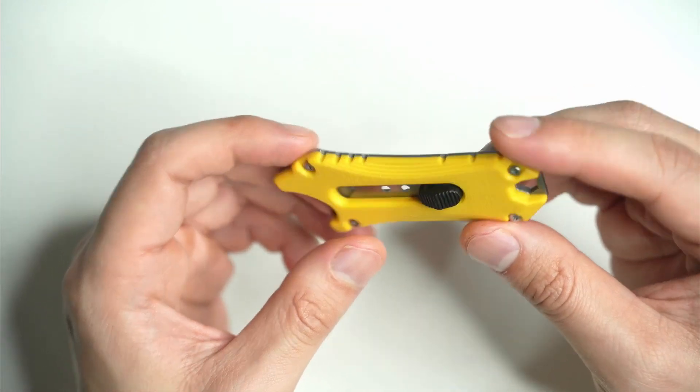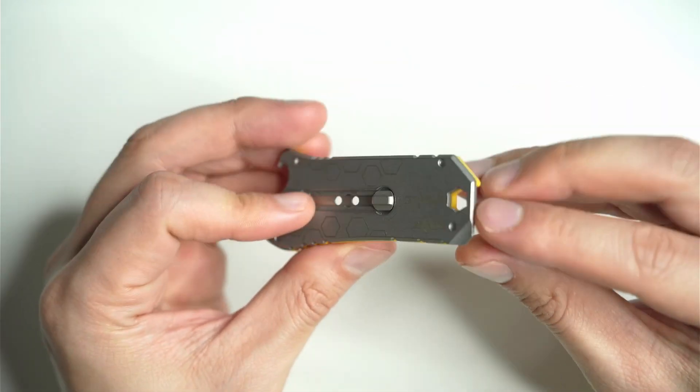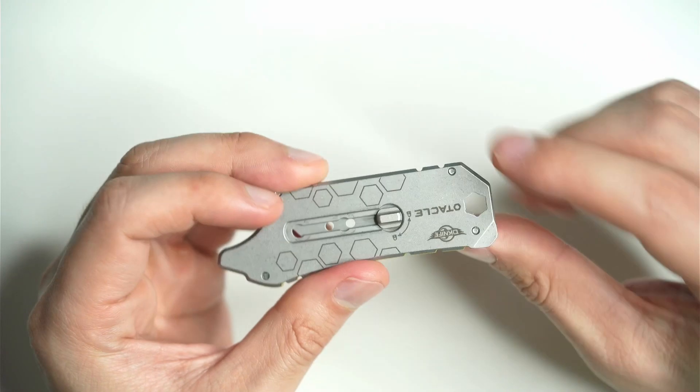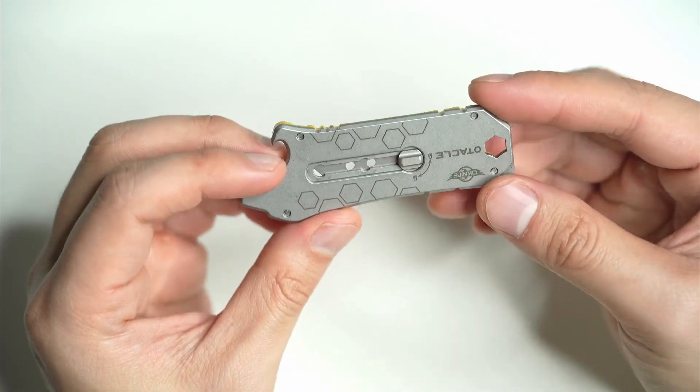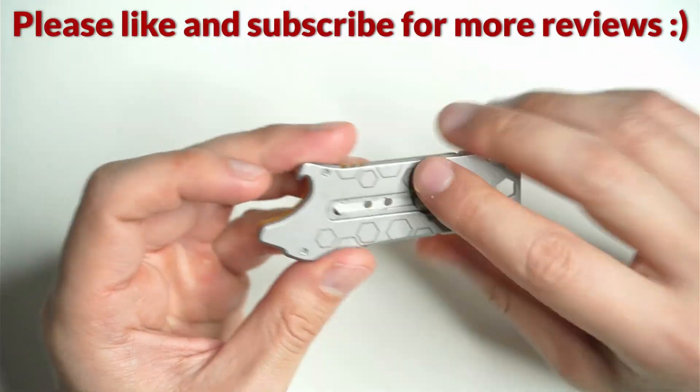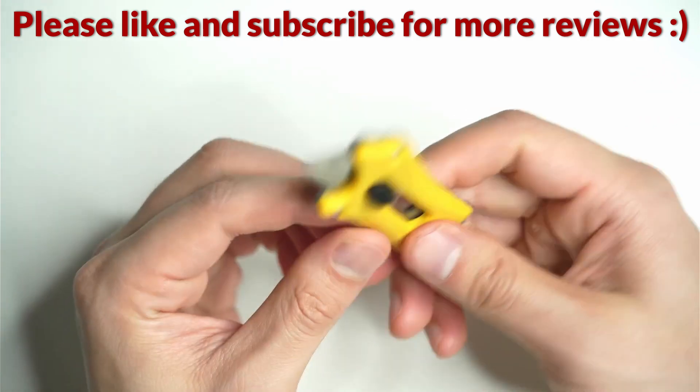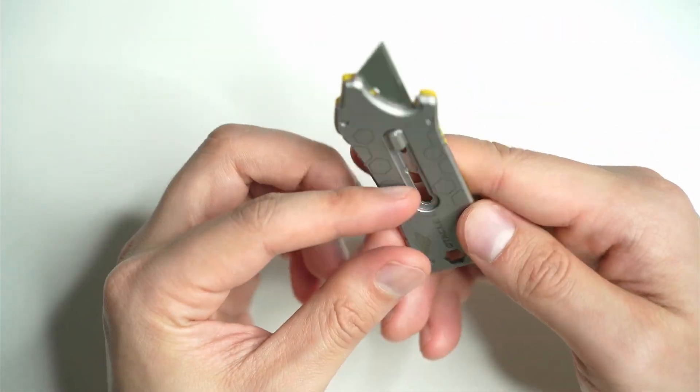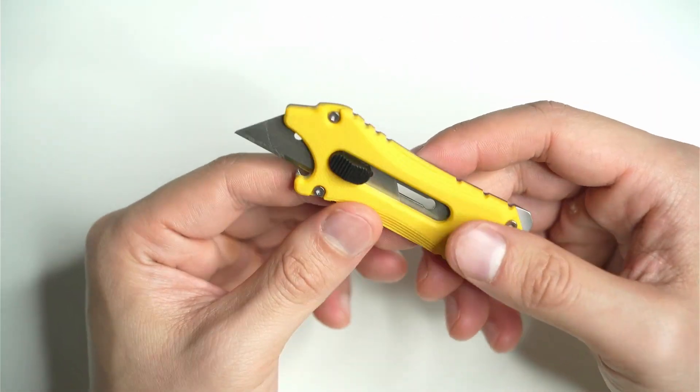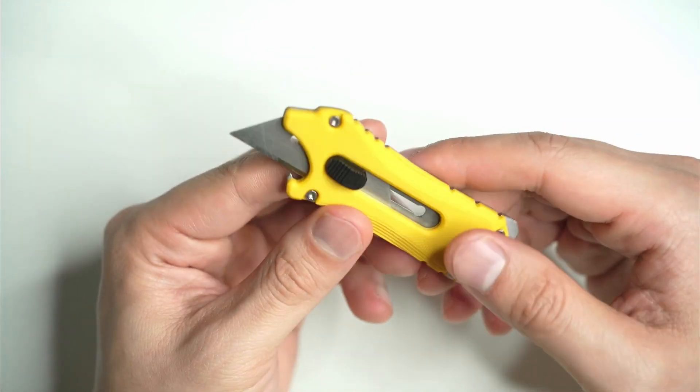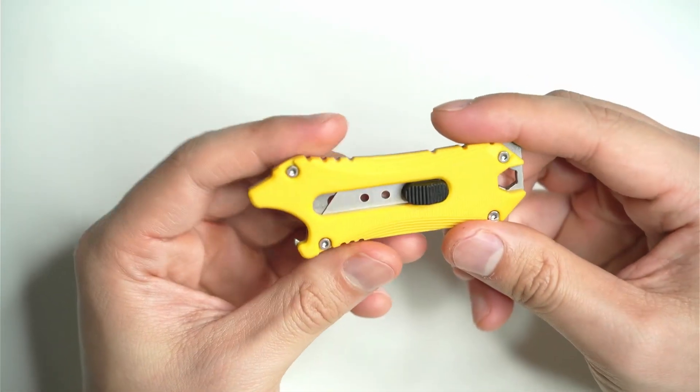So it's a bottle opener, mini pry bar slash slotted screwdriver here in the corner. It's got a 6.35mm hex wrench as well. But of course you've got this blade as well out here. It's a normal sort of box cutter blade and it's good that you can just replace it with any sort of stock blade as well.